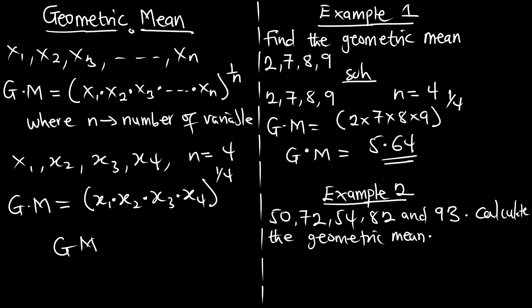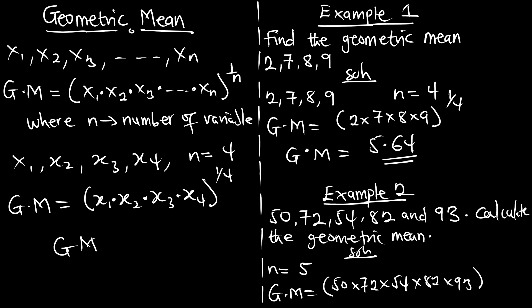Example 2: we have 50, 72, 54, 82, and 93. Calculate the geometric mean. Here n equals 5. Therefore the geometric mean is 50 multiplying 72 multiplying 54 multiplying 82 multiplying 93, raised to the power 1 over 5. When you punch this on your calculator, your GM is going to be 68.265.